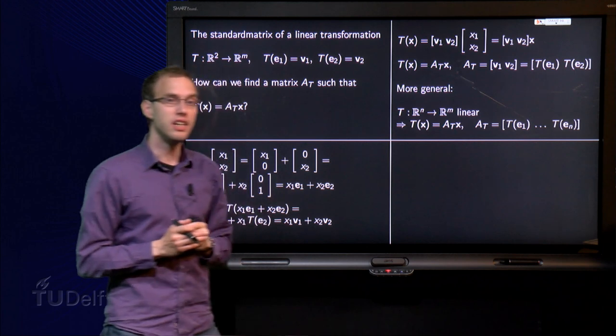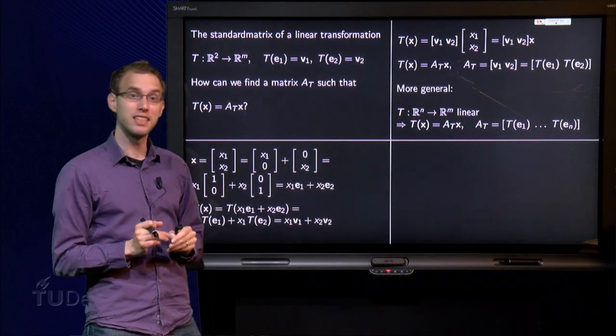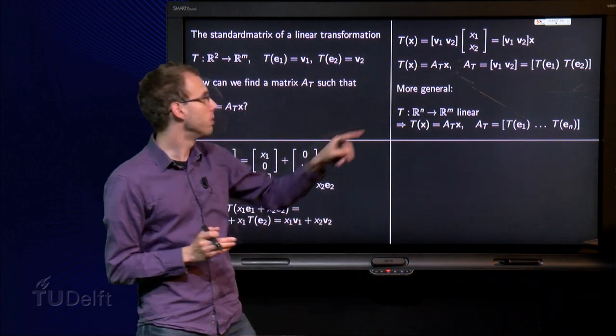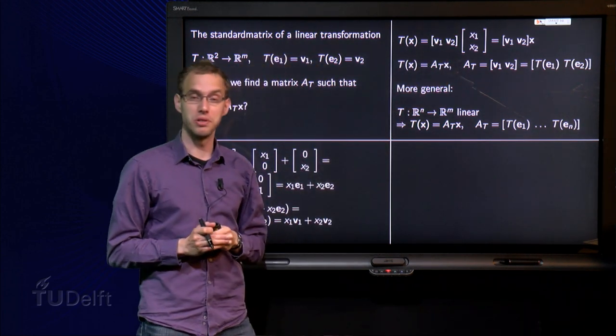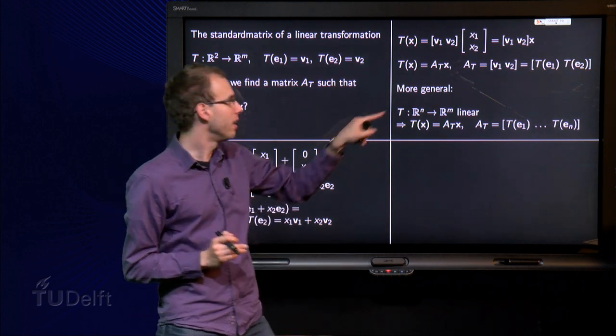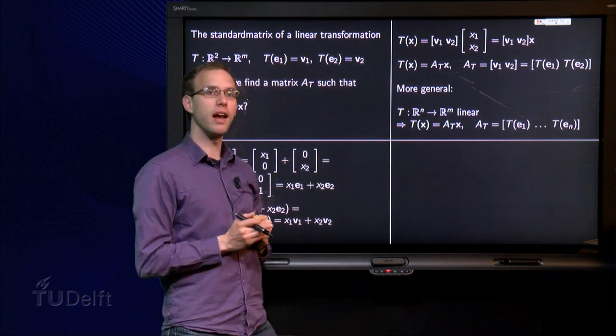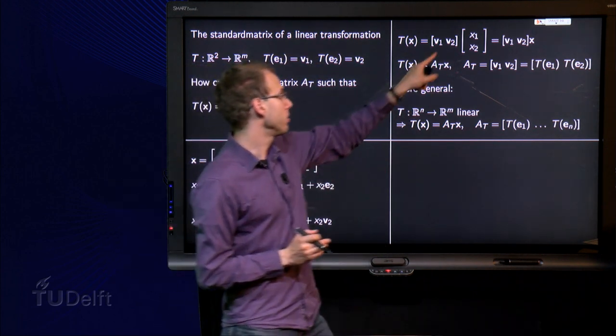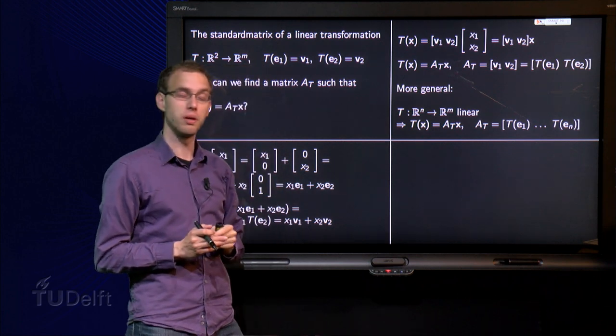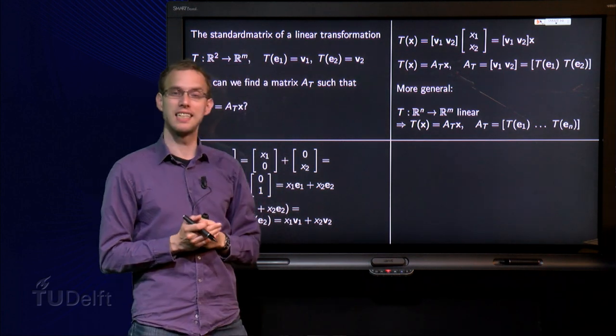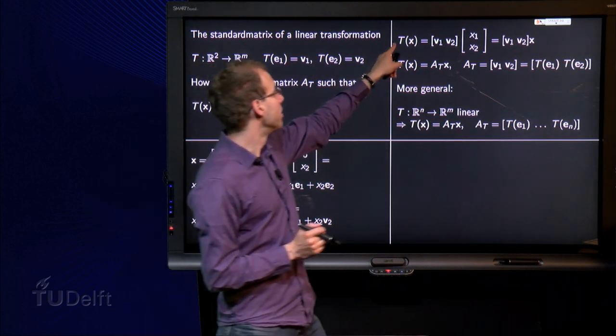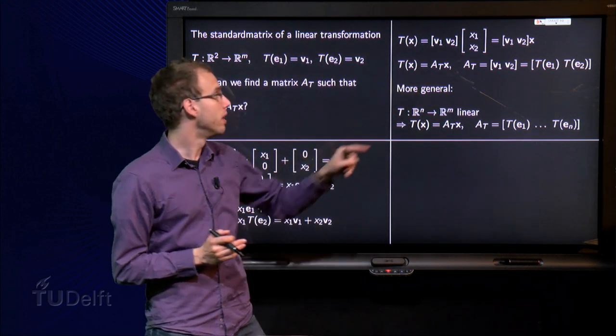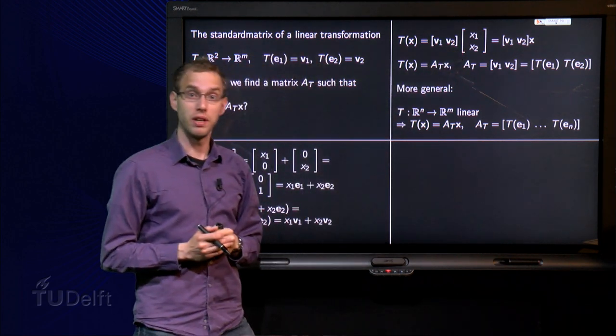Now you see this T of X, over here you see a matrix times a vector, namely the matrix consisting of V1 and V2 times the vector consisting of X1 and X2. If you don't see it straight away, go the other way. If you use matrix times vector over here, you get X1 times V1 plus X2 times V2 which is exactly what is written there.